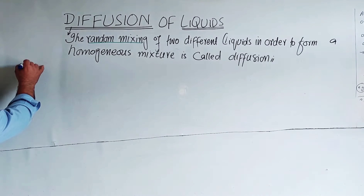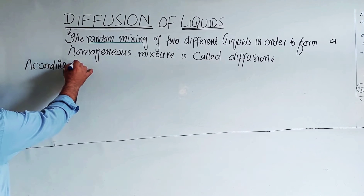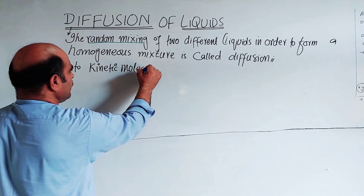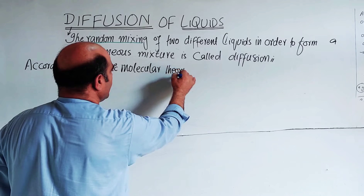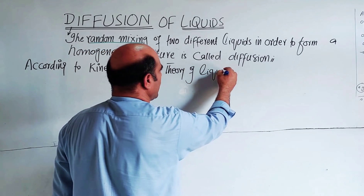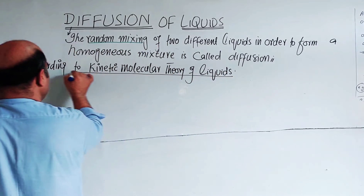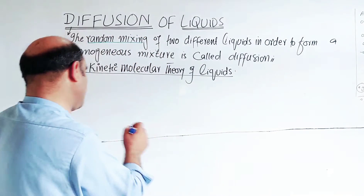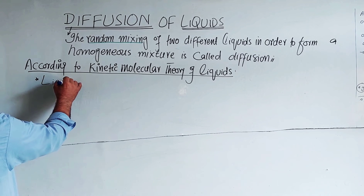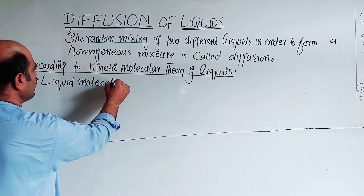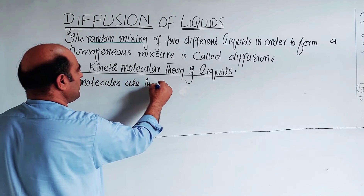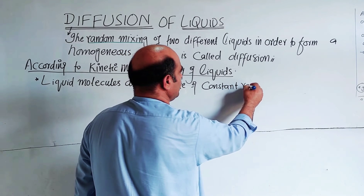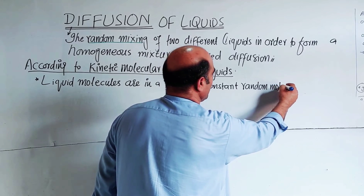Let's start with the kinetic molecular theory of liquids. According to the kinetic molecular theory of liquids, liquid molecules are in a state of constant random motion.